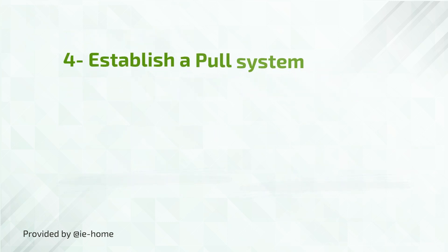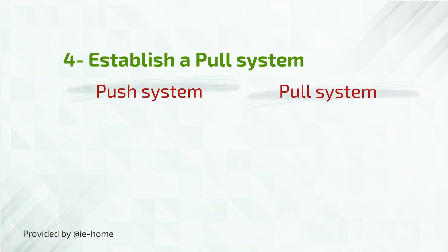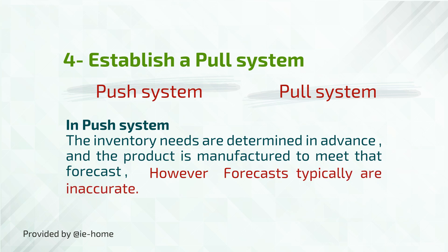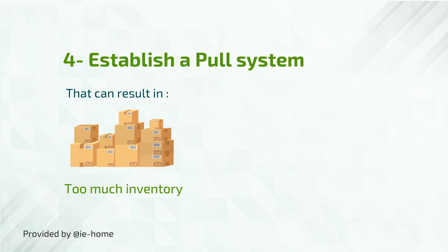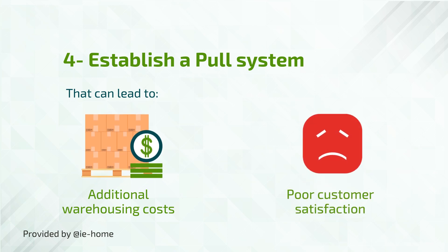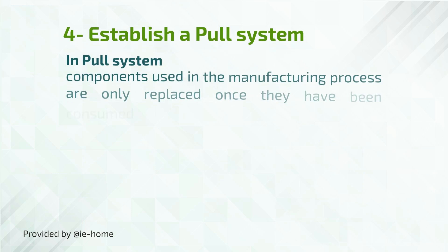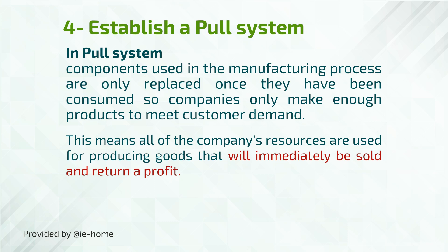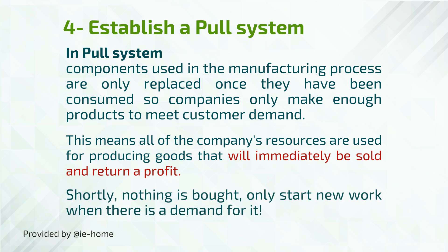Principle 4: Establish a pull system. We have two types of systems: push and pull. In a push system, inventory needs are determined in advance and the product is manufactured to meet that forecast. However, forecasts are typically inaccurate, which can result in too much or not enough inventory, additional warehousing costs, and poor customer satisfaction. In a pull system, components are only replaced once they have been consumed, so companies only make enough products to meet customer demand. This means all resources are used for producing goods that will immediately be sold and return a profit — nothing is bought or started unless there is demand for it.